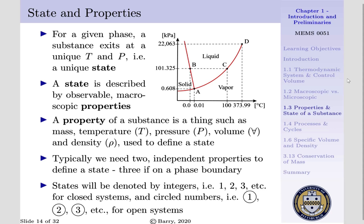A state is described by observable macroscopic properties, and a property of a substance is something such as mass, temperature, pressure, volume, and density - something that's measurable and can be used to define a state.